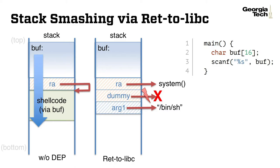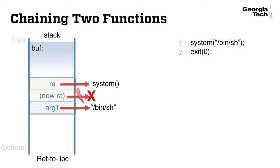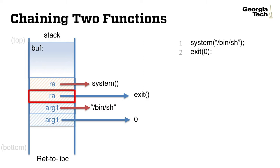What happens when the system function returns? It simply crashes as the instruction pointer has the dummy value. Let's chain two functions in this way. We'd like to execute exit zero after completing the system function.